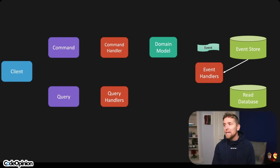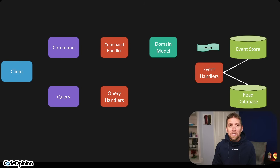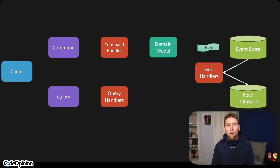In the meantime, what happened is we have some projection that's taking that event, processing it, and then updating our read model. So what happened? Eventual consistency. We had our client make a request, the command, some type of state change, persisting an event to our event store, and then reading from a read database that wasn't updated. But that's just one example — eventual consistency is all over the place with read replicas and distributing data between services.